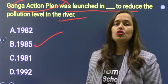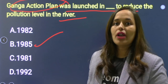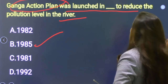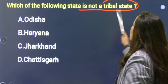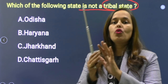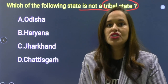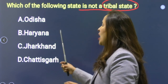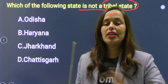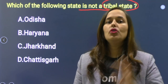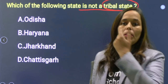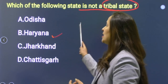अगर question plan का नाम पूछा जाए तो program name is Ganga Action Plan. Next question: Which of the following states is not a tribal state? Options: Orissa, Haryana, Jharkhand, Chhattisgarh. Correct option is B — Haryana में कोई भी tribal community नहीं पाई जाती। Jharkhand, Chhattisgarh — सब जगह tribes पाई जाते हैं।